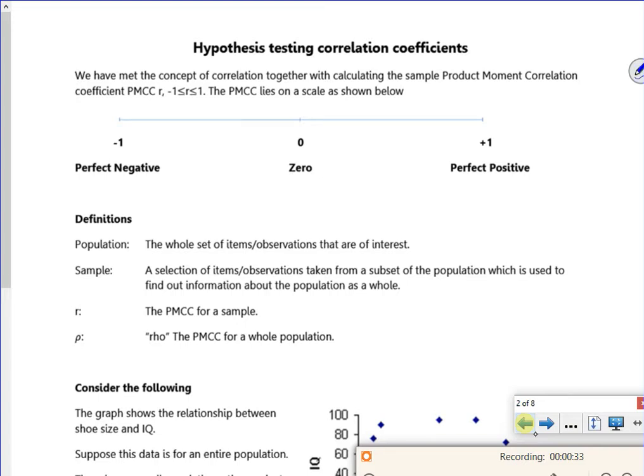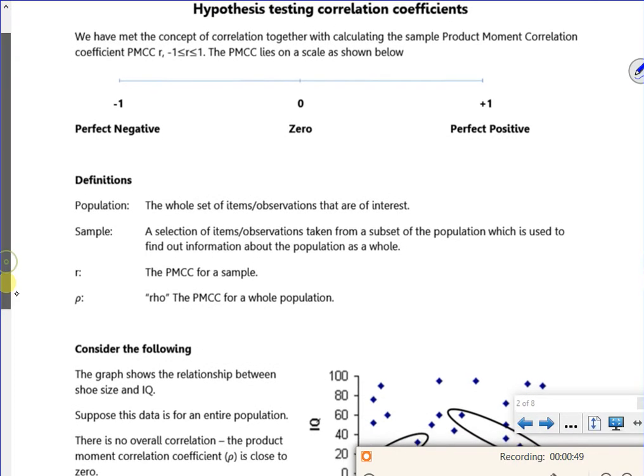So we know that R gives us a value for our correlation. If R is minus 1 it's perfect negative correlation. If R is plus 1 it's perfect positive. If it's zero there's no correlation and then we can have varying different degrees of positive or negative correlation.